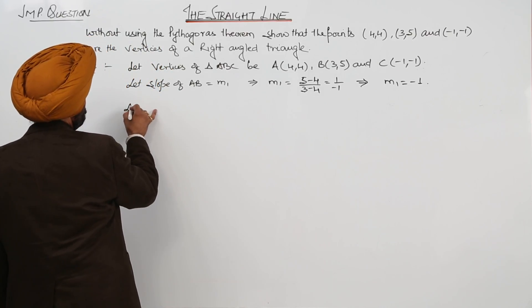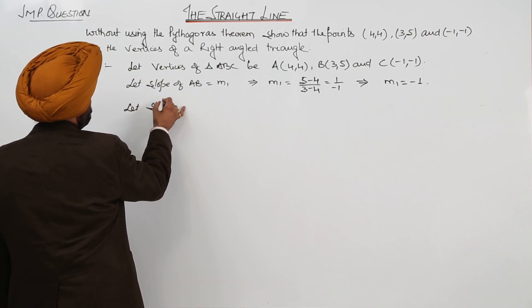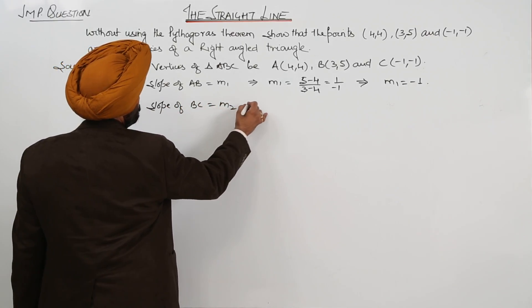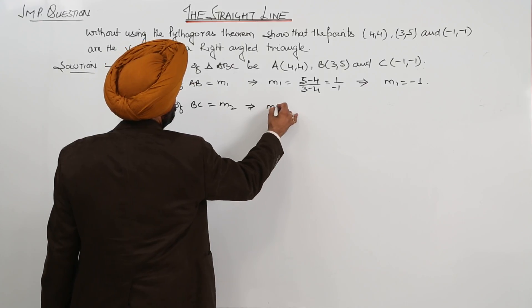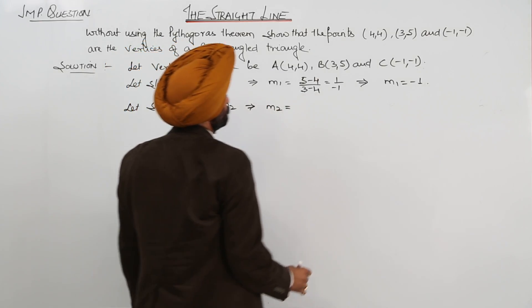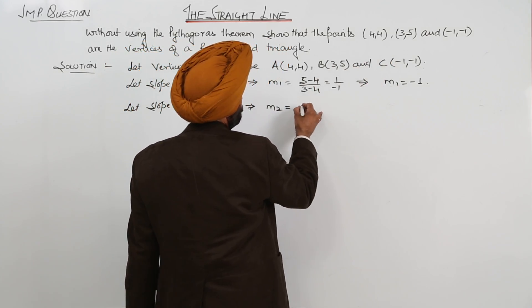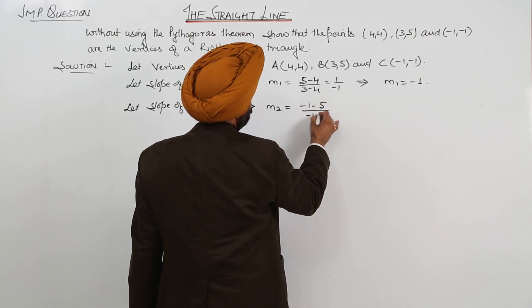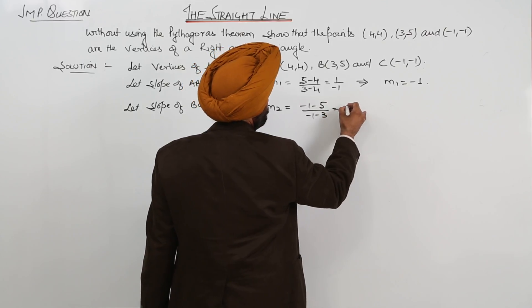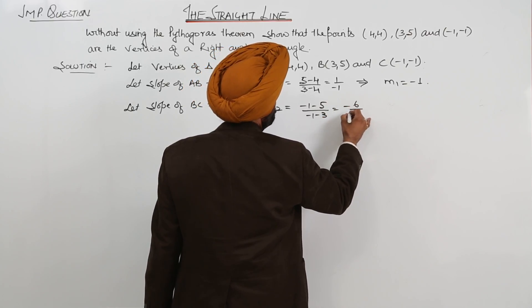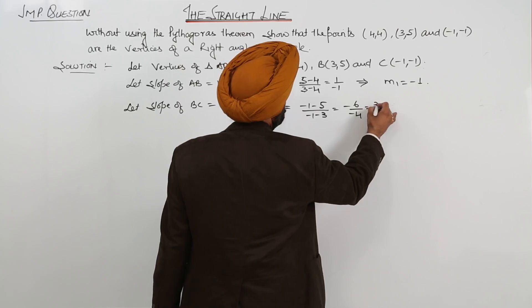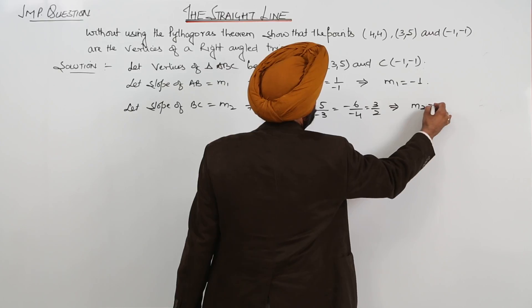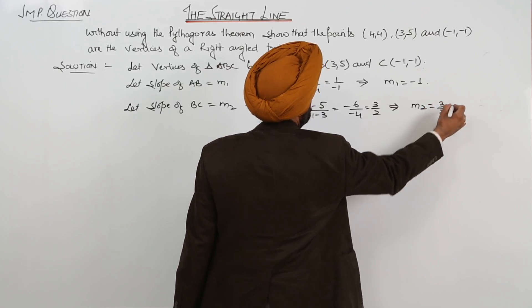Now, let slope of BC equal M2. M2 is slope of B and C. Negative 1 minus 5 upon negative 1 minus 3. This becomes negative 6 upon negative 4, which equals 3 by 2. So M2 is 3 by 2.